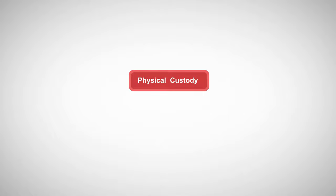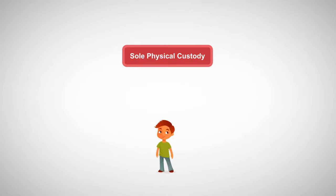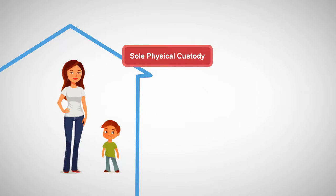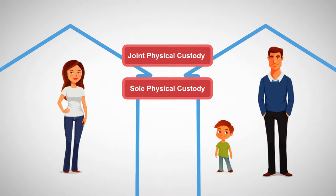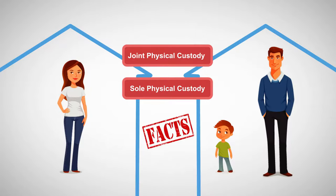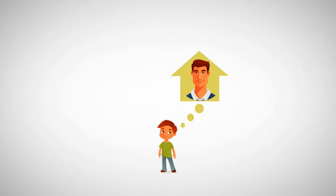Physical custody is the actual possession and control of a child and gives the parent the right to have the child live with him or her. Sole physical custody means that a child resides only with one parent for significant periods of time. If a child resides with two parents for significant periods of time, these parents have joint physical custody of the child. Determining whether a sole or joint physical custody arrangement should be created is a fact-based determination. Traditionally, courts believed that a child, especially a young child, should only call one place home.